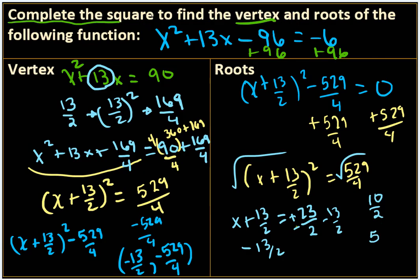Then we get negative 23 minus 13. Negative 23 minus 13 is negative 36, divided by 2, and we get negative 18. And those are your two roots, 5 and negative 18.